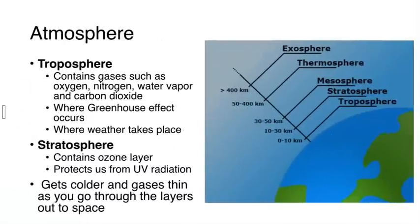Let's move on to talking about the atmosphere. There's two big layers that are going to be important as far as the AP exam and the test for our class is concerned: the troposphere and the stratosphere or the bottom two layers of the atmosphere. The troposphere is going to contain gases such as oxygen, nitrogen, water vapor H2O, and carbon dioxide, all naturally existing and all very important for helping keep us warm. The troposphere is where the majority of the greenhouse effect will take place.